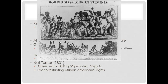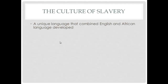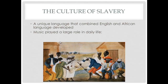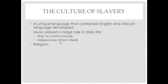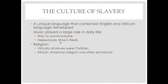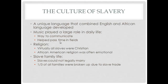Regarding the culture of slavery: a unique language combining English and African languages developed among African Americans. Music played a large role in daily life — it was a way to communicate and helped pass time in the fields. Religion was equally important; virtually all slaves were Christian by the 1800s, and African American religious expression was often emotional and focused on themes of freedom and deliverance. Slaves could not legally marry, but held their own ceremonies. One-third of all slave families were broken up due to the slave trade, and a frequent reason slaves ran away was to reunite with family members sold to other plantations.